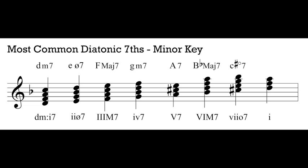With that we've labeled all our most common diatonic sevenths in minor. There are other versions that show up in music from the melodic and natural minor scales, but these are the ones we'll see most commonly and use in most of our writing. All the common diatonic sevenths in minor: i minor seven, ii half-diminished seven, III major seven, iv minor seven, V7, VI major seven, and vii fully diminished seven.